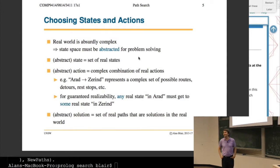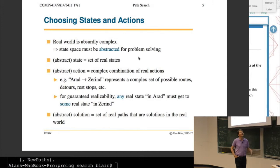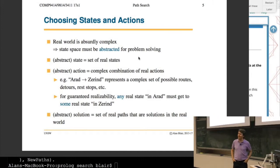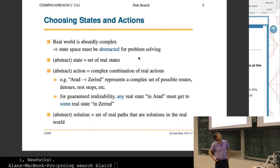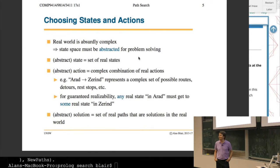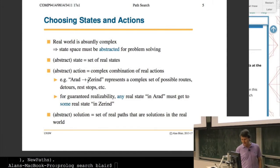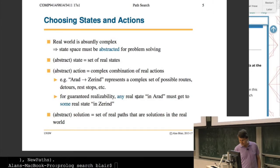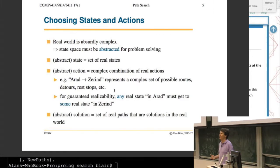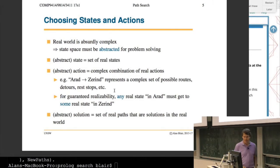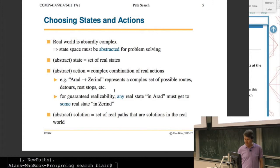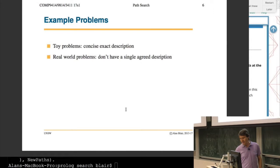Often we have to abstract away details from the real world. When we say 'drive from Arad to Zirind' we treat that as an atomic action, but in fact you have to get in the car, follow road signs, drive along the road, maybe stop for petrol. So in order for this path to be realized, what we mean is: no matter where we are in Arad, we will be able to get to some place in Zirind. If we can say that for each step in the path, we will successfully make our way to the goal. There are always details we abstract away, and some problems don't have a single agreed description.